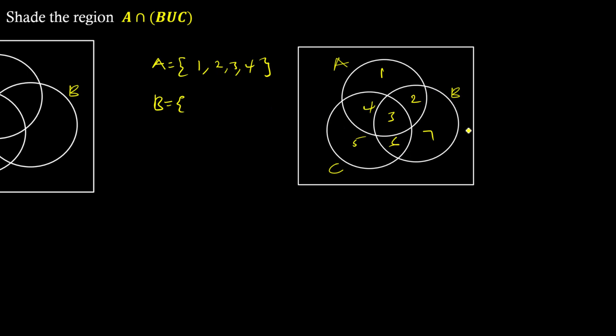So set B is this region: two, three, six, seven = {2, 3, 6, 7}. And C is three, four, five, six = {3, 4, 5, 6}. Let's find B union C, what is inside the bracket.